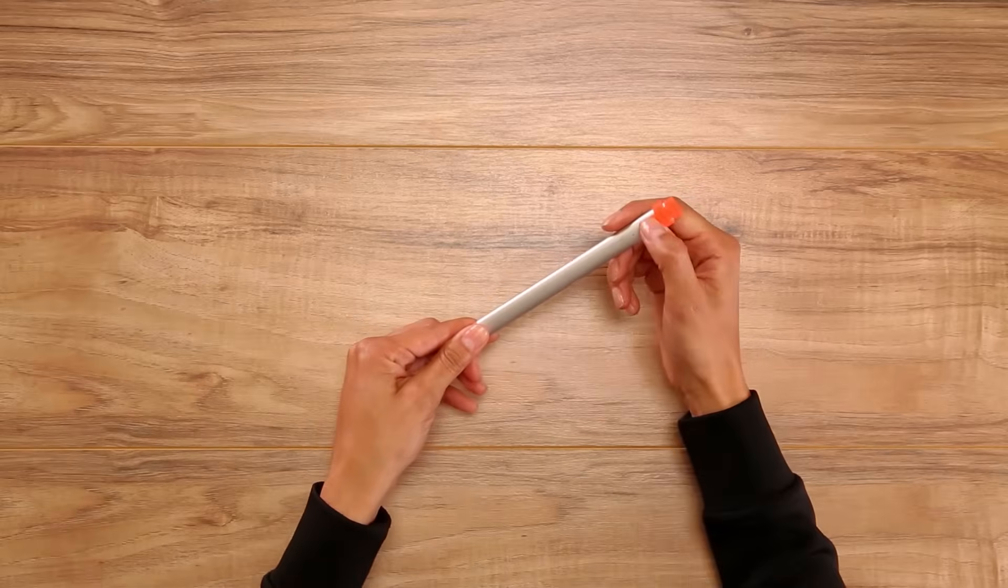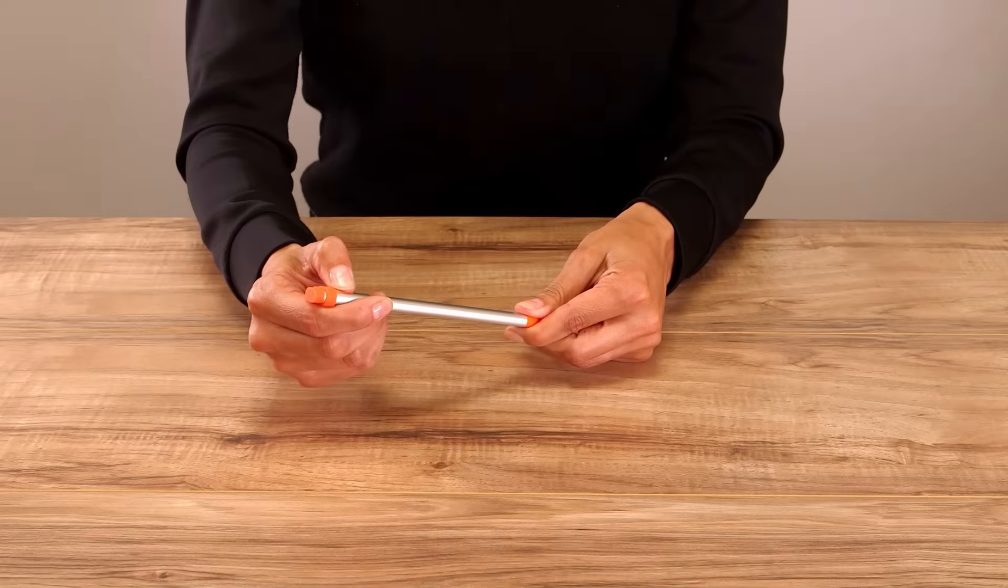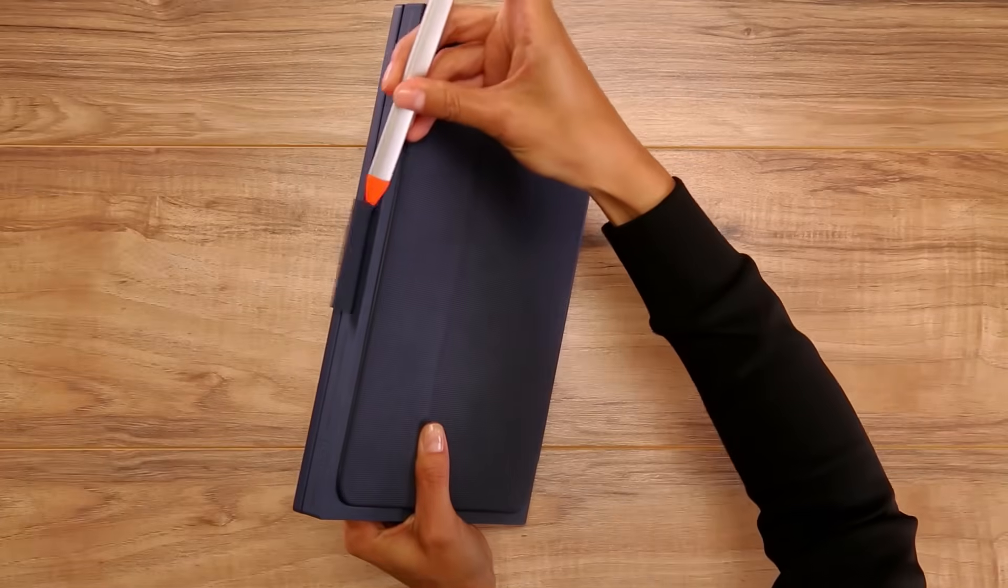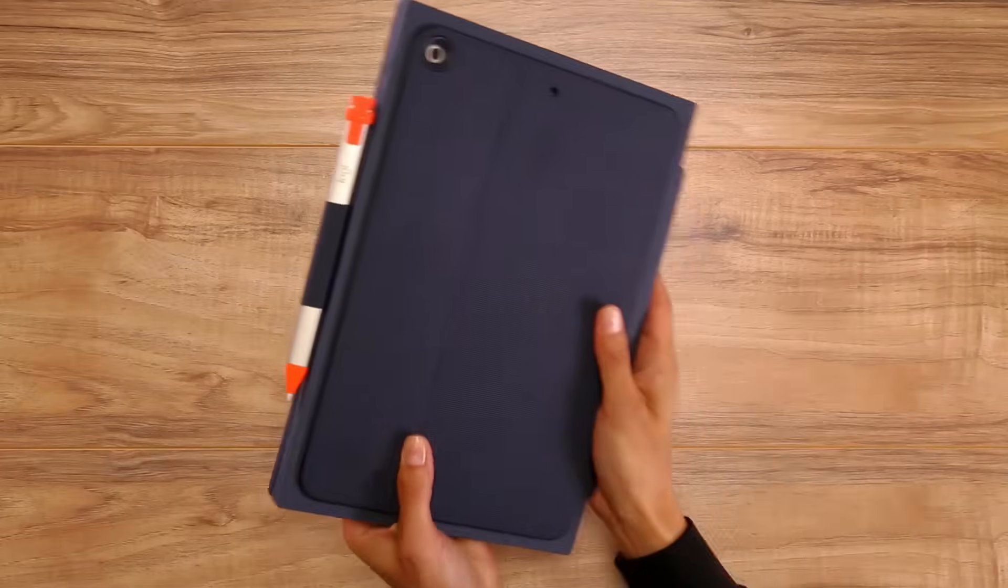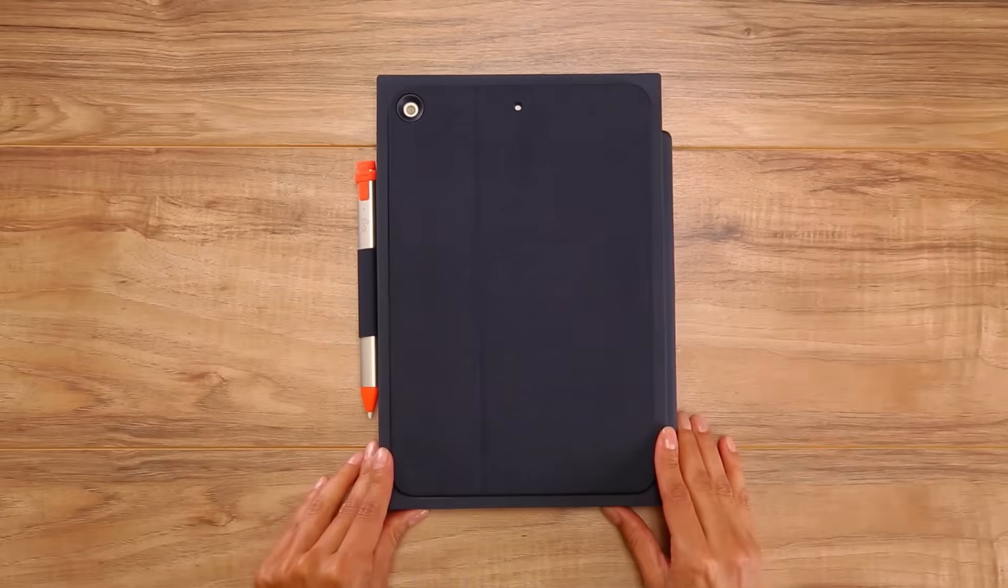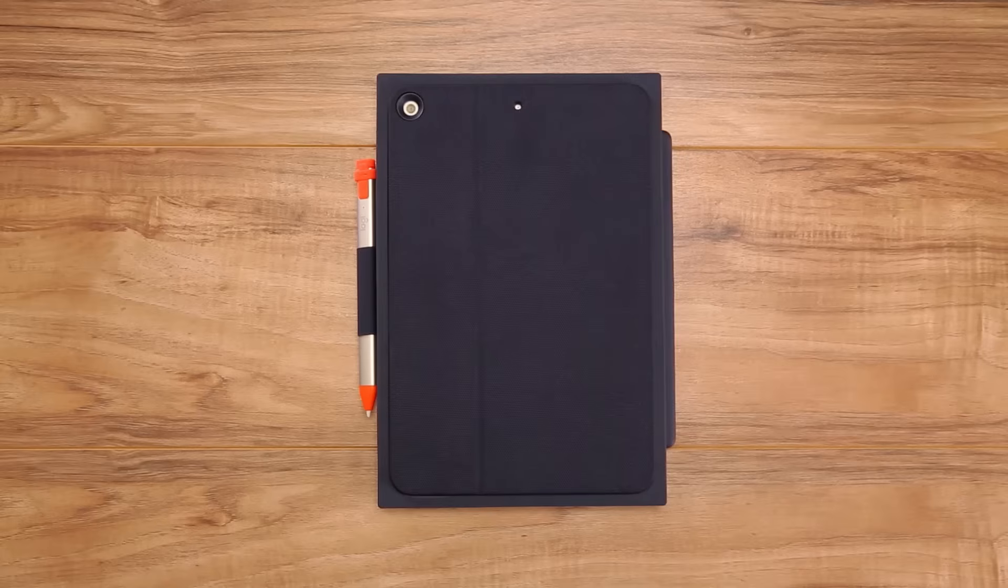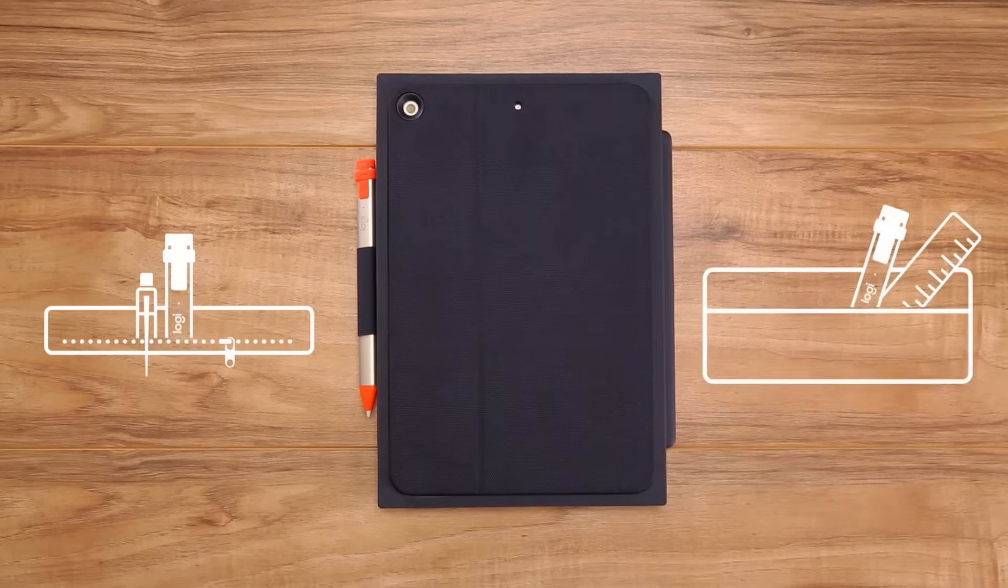Turn Logitech Crayon off when you're finished using it. If you are using Rugged Combo, simply slide Logitech Crayon into the pencil holder before transportation. To avoid damage, never place Logitech Crayon loose in your bag or backpack. Place it in the pocket or pen pouch instead.